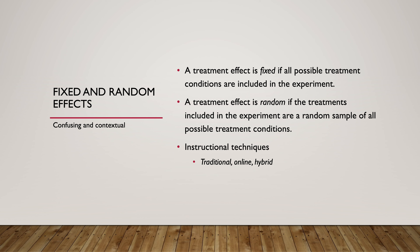We're going to talk a lot about fixed and random effects. A treatment effect is fixed if all possible treatment conditions are included in the experiment. A treatment effect is random if the treatments included in the experiment are a random sample of all possible treatment conditions. For instructional techniques — traditional, online, hybrid — if those are the only three, it's a fixed effect. But if there are additional techniques and we just sampled these, and still want to generalize, then it would be a random effect. It depends on the context of the question.